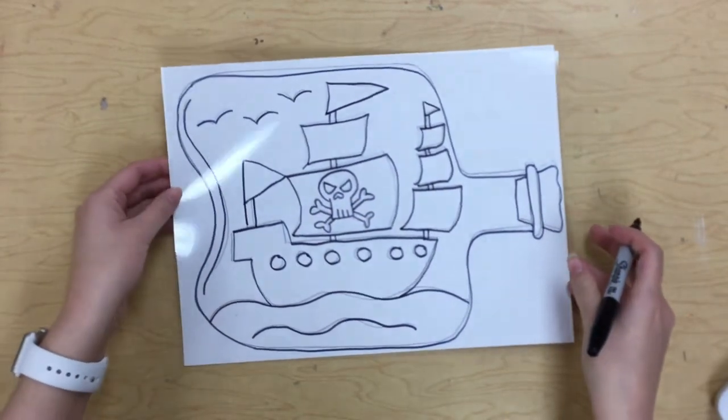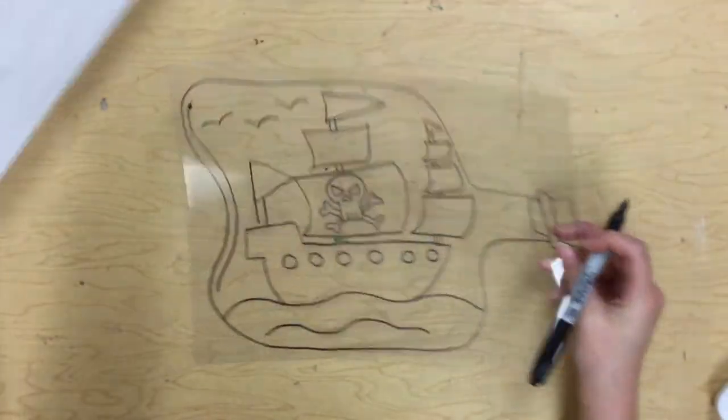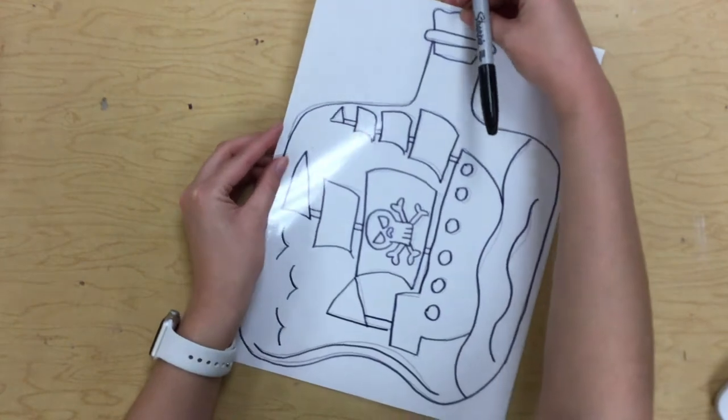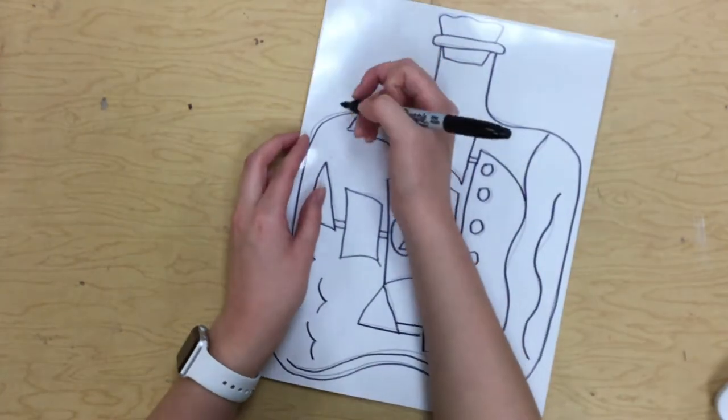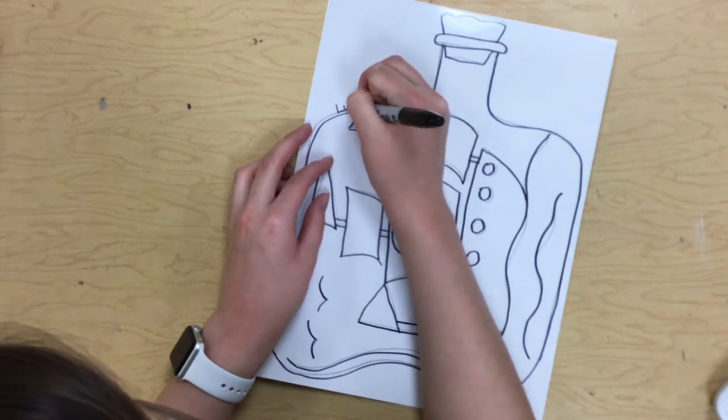There we go. Now at this point you could probably take your paper out from underneath, but just for the sake of the video so you can see my colors really well, I'll leave it on there. Also though, before you finish up with your black, make sure you write your name and class code somewhere along the edge.